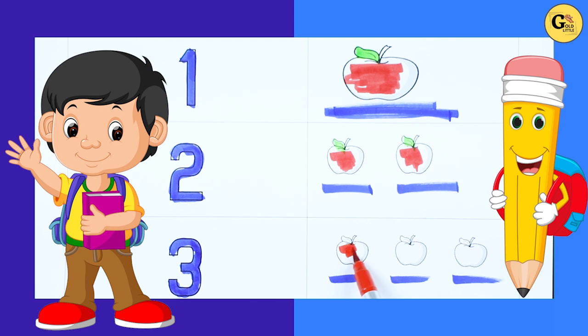Let's fill the color inside the apple. 1, 2, 3 with green leaf. 1, 2, 3.